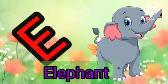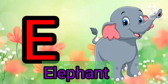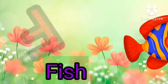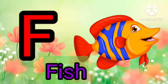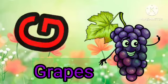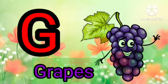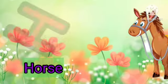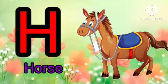E for elephant, elephant means haati. F for fish, fish means machli. G for grapes, grapes means angoor. H for horse, horse means ghoda.